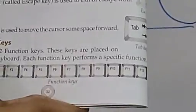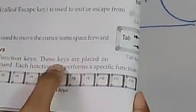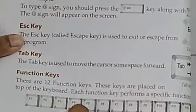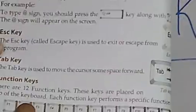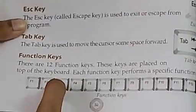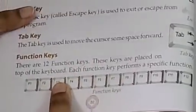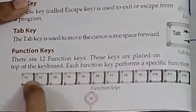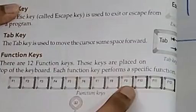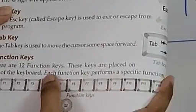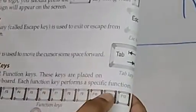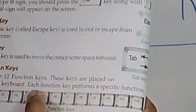Function key. There are 12 function keys. These keys are placed on the top of the keyboard — F1, F2, F3; we all have seen these keys on a keyboard. These are called the function keys. Each function key performs a specific function.